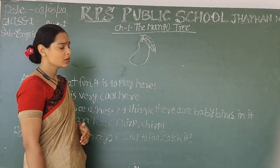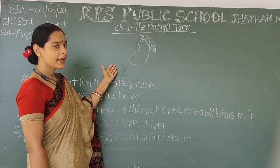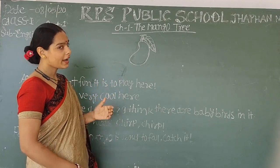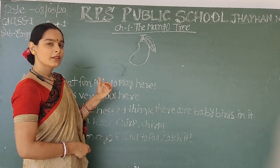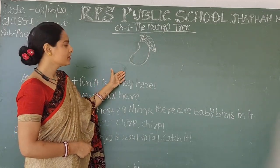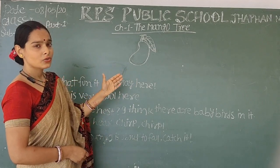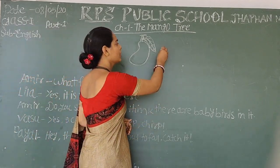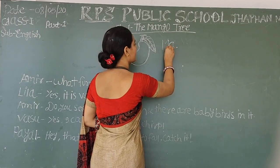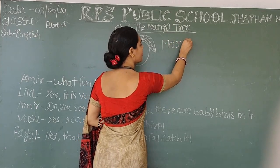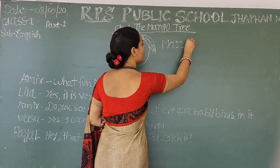You know students, look at this picture. What is this? Tell me, what is this? This is mango. How to write mango? M, A, N, G, O. Mango.